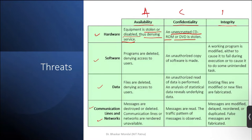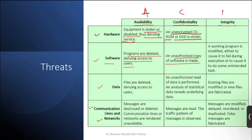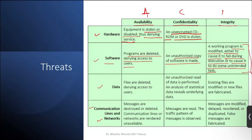If an unencrypted CD-ROM or DVD is stolen and the data on it is not encrypted, confidentiality is lost. Software programs being deleted delays user access, creating unavailability. Unauthorized copying of software loses confidentiality. For integrity, if a working program is modified to fail during execution or perform unintended tasks, the integrity of the software system is compromised.